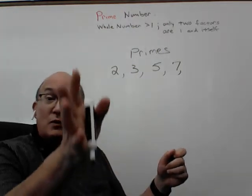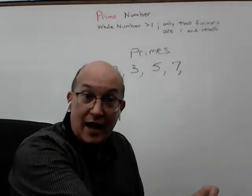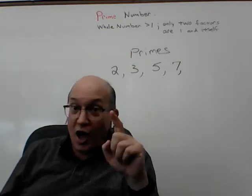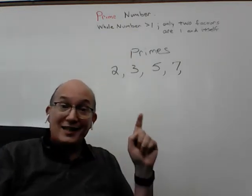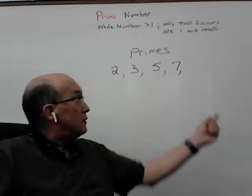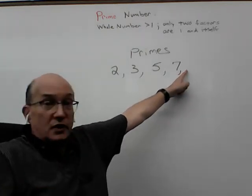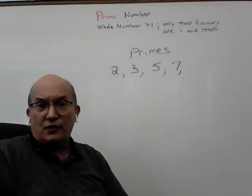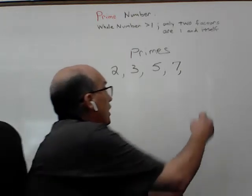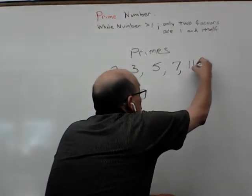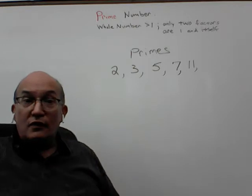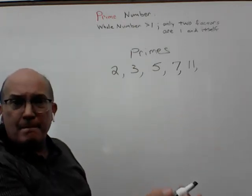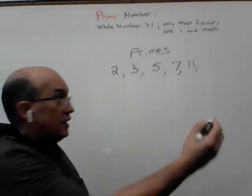What about nine? You might have suspected, seeing three, five, seven, that the next number would be nine. The odd whole numbers are one, three, five, seven, nine — but nine is odd and not prime. Why? Three times three. So we skip nine. Ten is not prime — two times five. Eleven: eleven is prime, the only two numbers that multiply to eleven are one and eleven. Twelve is not prime. Thirteen is prime.